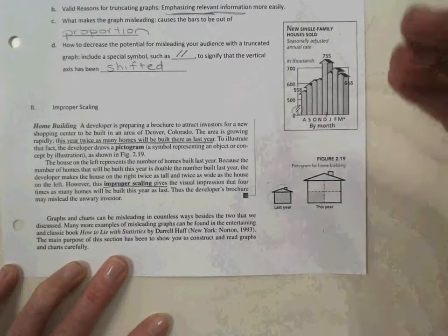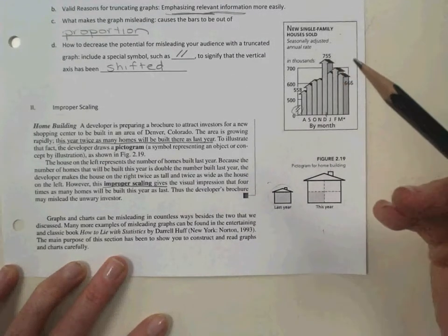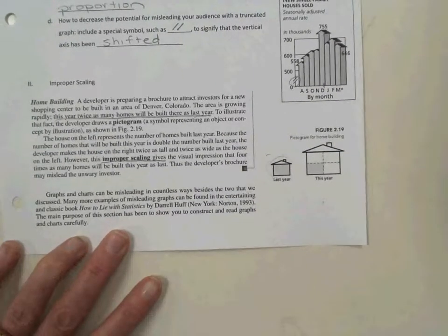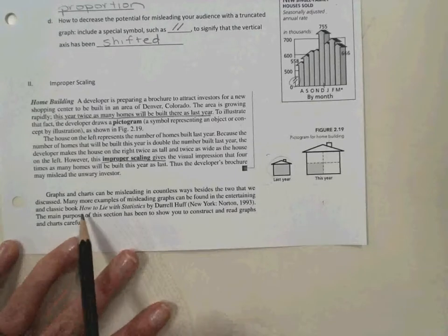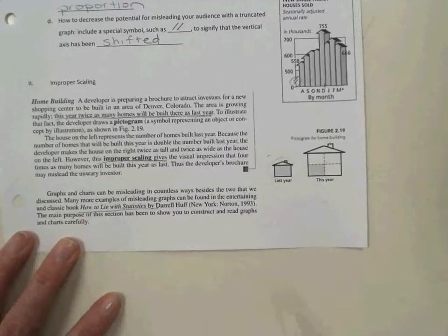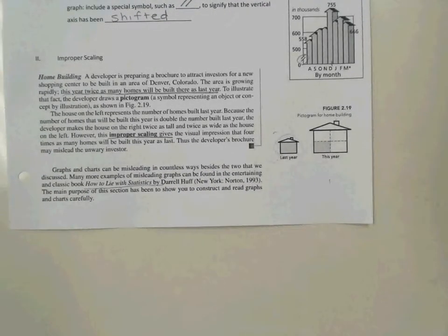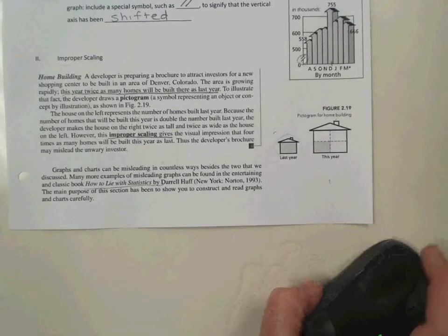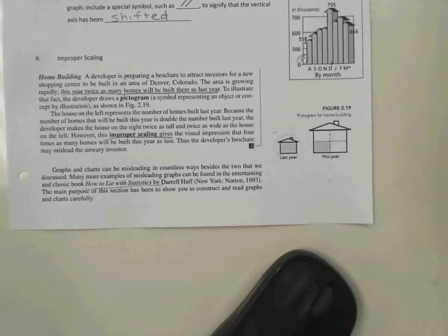These are just two ways that graphs can be misleading. But if you're interested, there's a pretty entertaining book out there called How to Lie with Statistics by Daryl Huff. You're welcome to check that out and find out all types of other ways that graphs and statistics in general can be misleading. And that's all for our notes for today. Thank you.